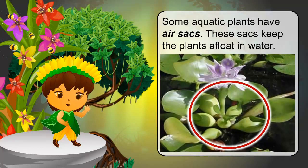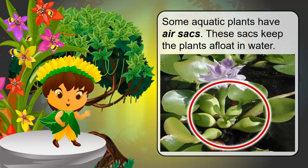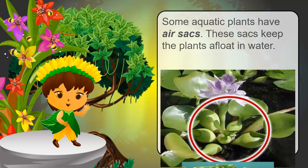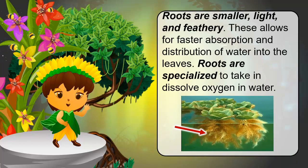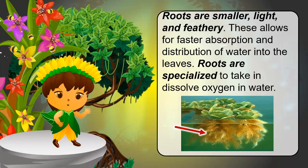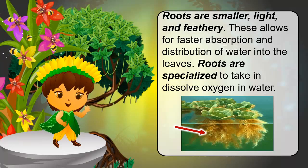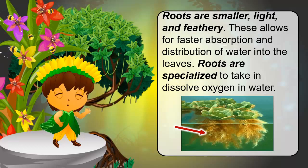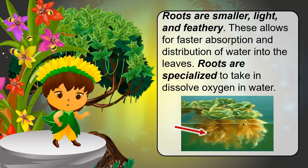Some aquatic plants have air sacs. These sacs keep the plants afloat in water. The roots of aquatic plants are smaller, light, and feathery. This allows for faster absorption and distribution of water into the leaves. Roots are also specialized to take in dissolved oxygen in water.